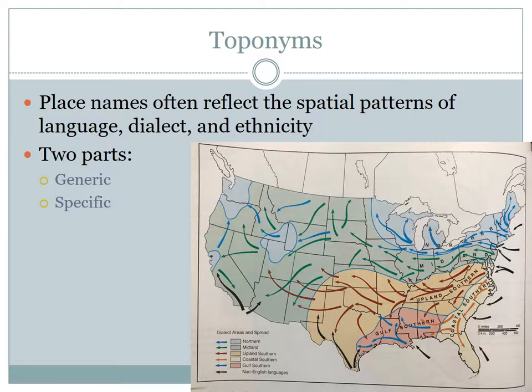Toponyms, which you may recall from unit one, are the name given to a portion of Earth's surface. Toponyms can reflect the influence of language on the landscape. Most place names have two parts: the generic and the specific. In American place names, examples include Huntsville, Harrisburg, Ohio River, Newfound Gap, and Cape Hatteras. The specific segments are Hunts, Harris, Ohio, Newfound, and Hatteras. The generic parts — which tell what kind of place is being described — are Ville, Burg, River, Gap, and Cape, respectively.